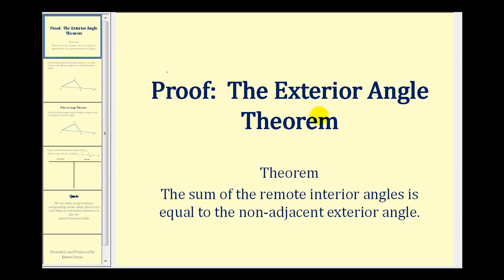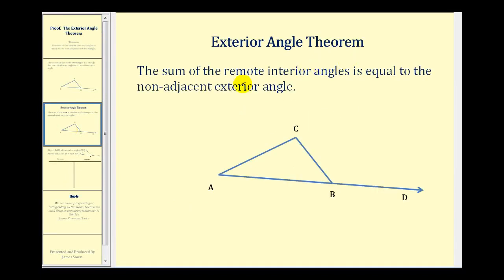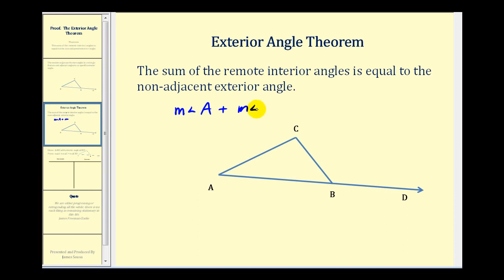Welcome to a proof of the exterior angle theorem. The exterior angle theorem states that the sum of the remote interior angles is equal to the non-adjacent exterior angle. Using angle CBD as our exterior angle, this theorem tells us that the measure of angle A plus the measure of angle C would be equal to the measure of angle CBD.